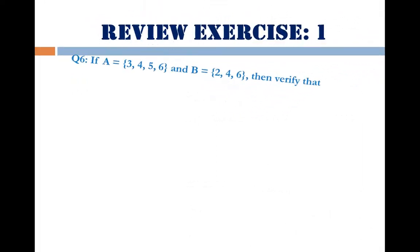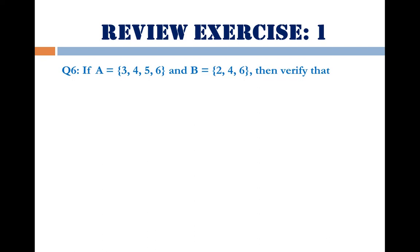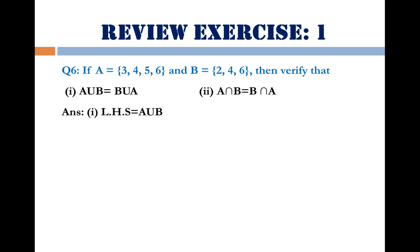Next is question number 6. If Set A = {3, 4, 5, 6} and Set B = {2, 4, 6}, verify: part 1, A ∪ B = B ∪ A (commutative property of union). Left-hand side: A ∪ B = {3,4,5,6} ∪ {2,4,6} = {2,3,4,5,6} — this is answer 1. All elements from both sets are written once.